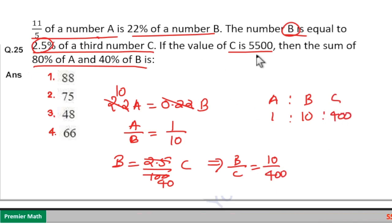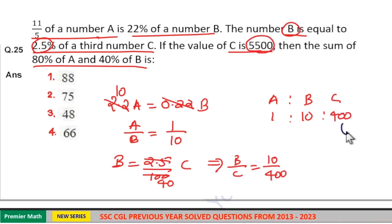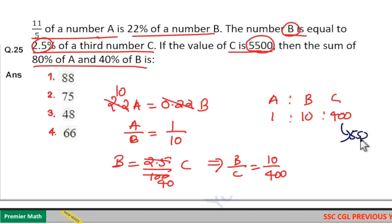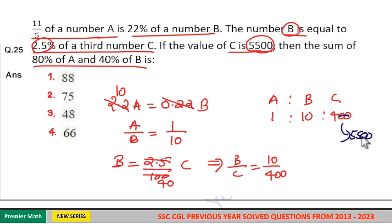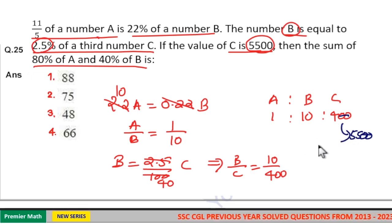In the question C is given as 5500, which means this 400 part is equal to 5500. Then 4 part is equal to 55. If 4 part is 55, then 1 part is 55 by 4.